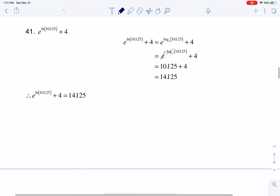So this problem comes down to a matter of knowing that whenever you see an e and an ln like that, they cancel out. So quite literally, if I'm doing this, these two cancel out. The only thing that survives is this exponent, so I do 10.125 plus 4, and that's where I get my answer of 14.125.